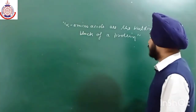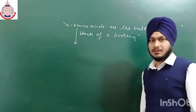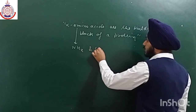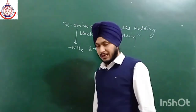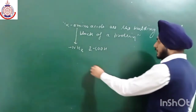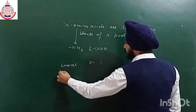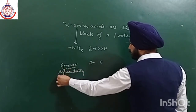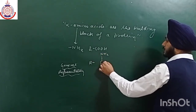Alpha amino acids contain two groups: NH2 and COOH. These two groups are present in amino acids. The general representation of this alpha amino acid is R–C(H)(NH2)(COOH).